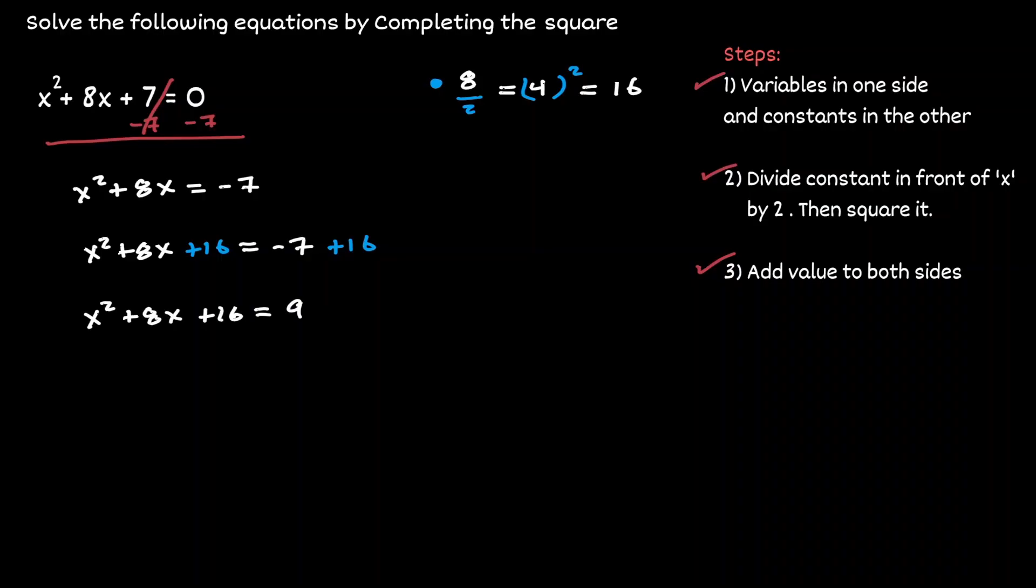Now notice what's going to happen on the left hand side. If we try to factor that expression, we're going to be looking at two numbers that if we multiply them, it needs to give us the value of 16. And if we add them up, they need to give us the value of 8.